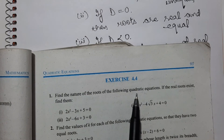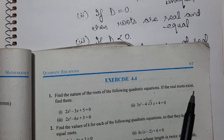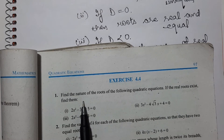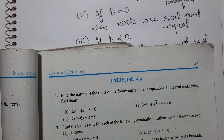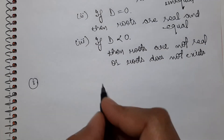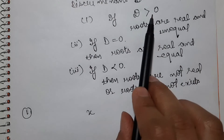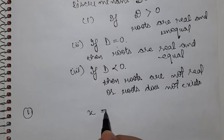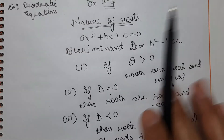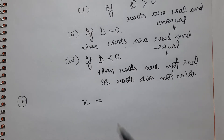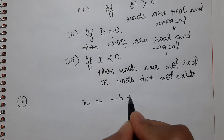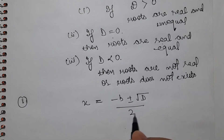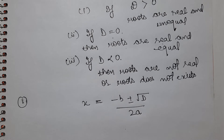Find the nature of the roots of the following quadratic equations. If the real roots exist, find them. So first we find the nature of roots using the discriminant. If D is greater than 0 or equal to 0, meaning roots are real, we then find the roots using the formula: x equals minus b plus or minus square root of D, upon 2 times a. Substitute the values and you can easily find the roots.